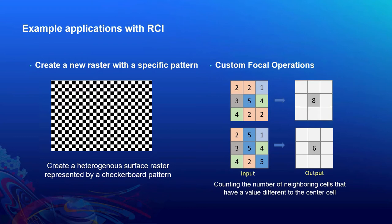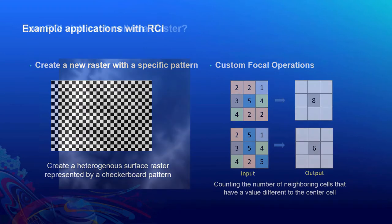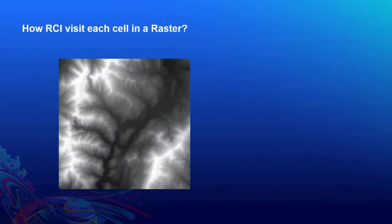I'll show more details about these two examples in the demo. Before diving in, I have one slide about the technical details of RCI — specifically, how RCI visits each cell in a raster. You may wonder what sequence RCI uses to iterate through raster cells, where it starts, what padding means as mentioned earlier, and why it matters. Hopefully this slide will answer those questions.